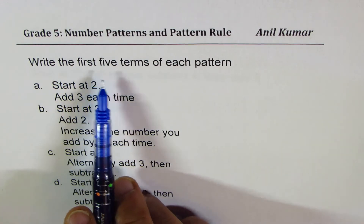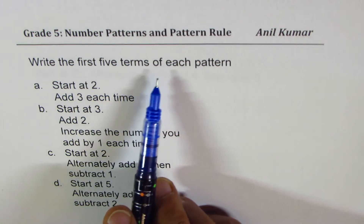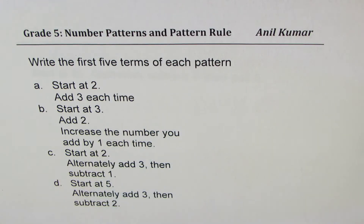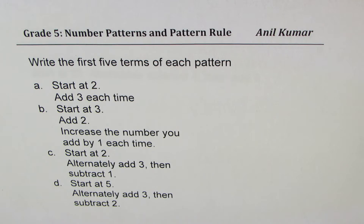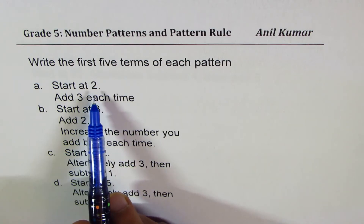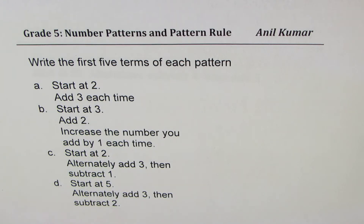You need to write the first five terms of each pattern. You can pause the video, copy this question, and for all these four patterns try to write the first five terms. The very first one is: start at two, add three each time. So that is simple — this is what you had been doing so far. So how do we write the pattern for this?